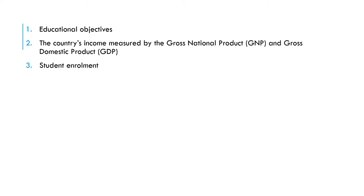Now let's look at student enrollment. The total expenditure on the system depends largely upon the student population. When preparing the school budget, the number of students, the number of classes, and the number per grade must be considered. To a large extent, the expected income of the school depends on school enrollment, and school enrollment goes a long way to determine what needs to be planned.